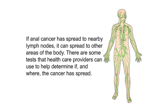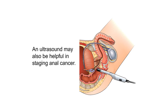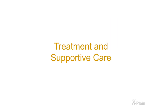If anal cancer has spread to nearby lymph nodes, it can spread to other areas of the body. Tests used to help determine if and where the cancer has spread include a CT scan, a chest X-ray, and an ultrasound. Sometimes staging is not complete until after surgery to remove the tumor and nearby lymph nodes.